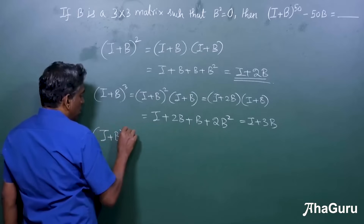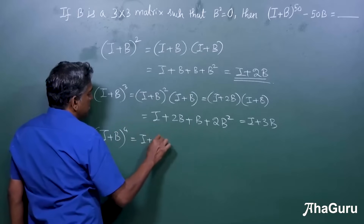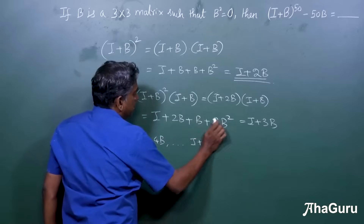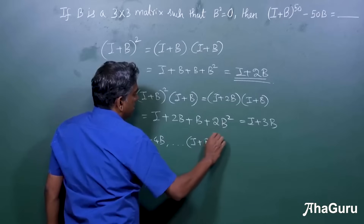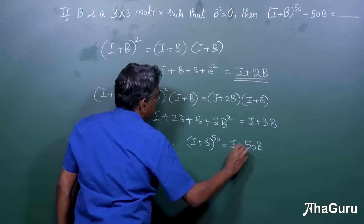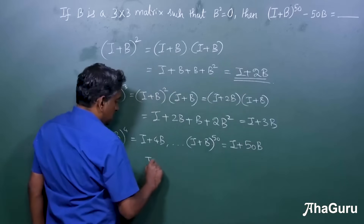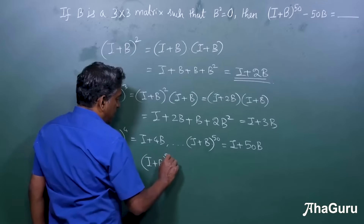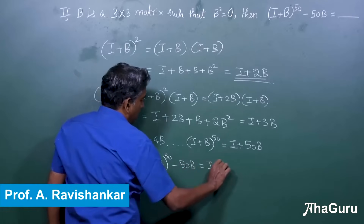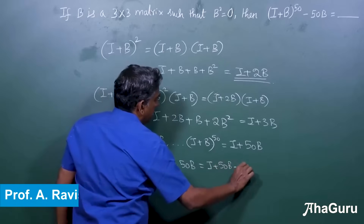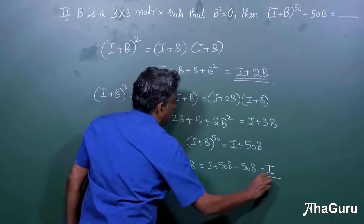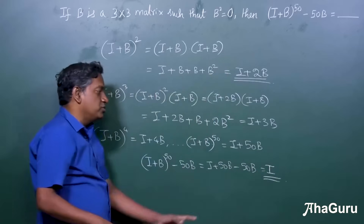So now you can see the pattern: (I + B)³ = I + 3B, (I + B)⁴ = I + 4B, and similarly (I + B)^50 will simply become I + 50B. So the given expression is (I + B)^50 minus 50B, which is I + 50B minus 50B, which is simply I.